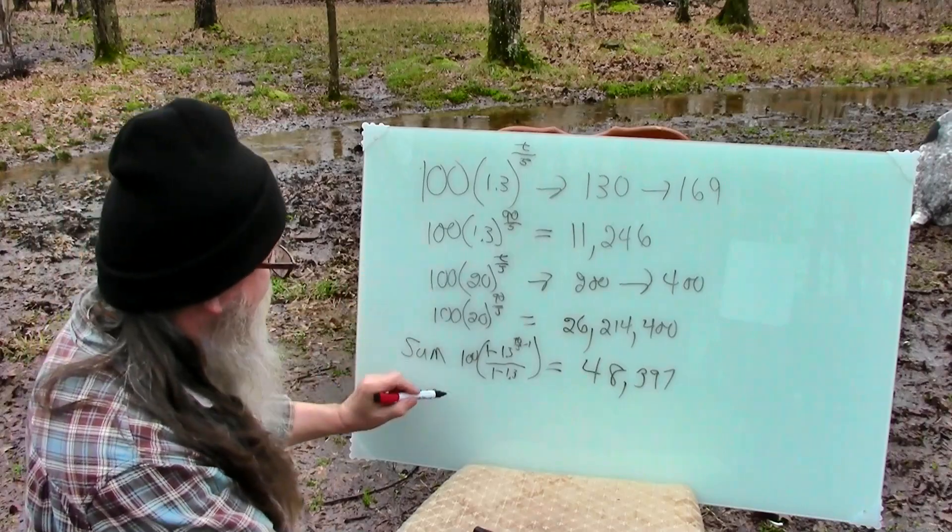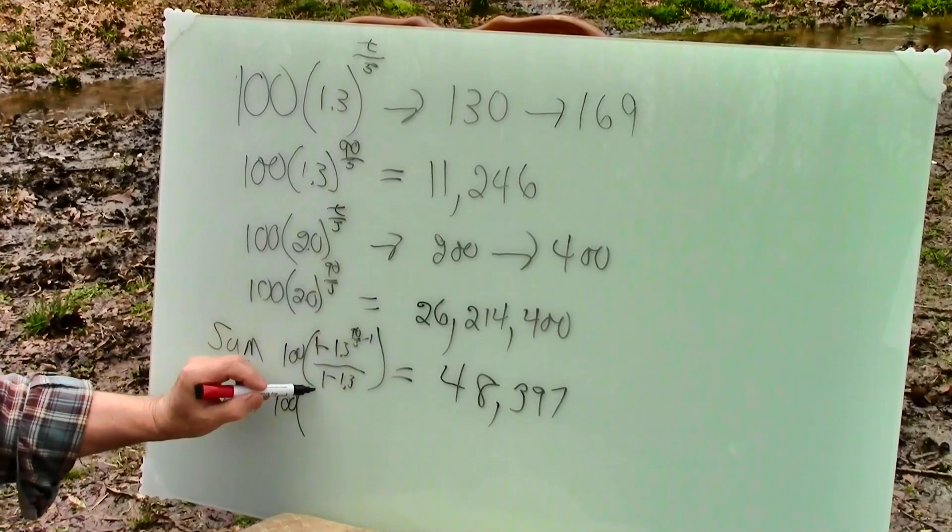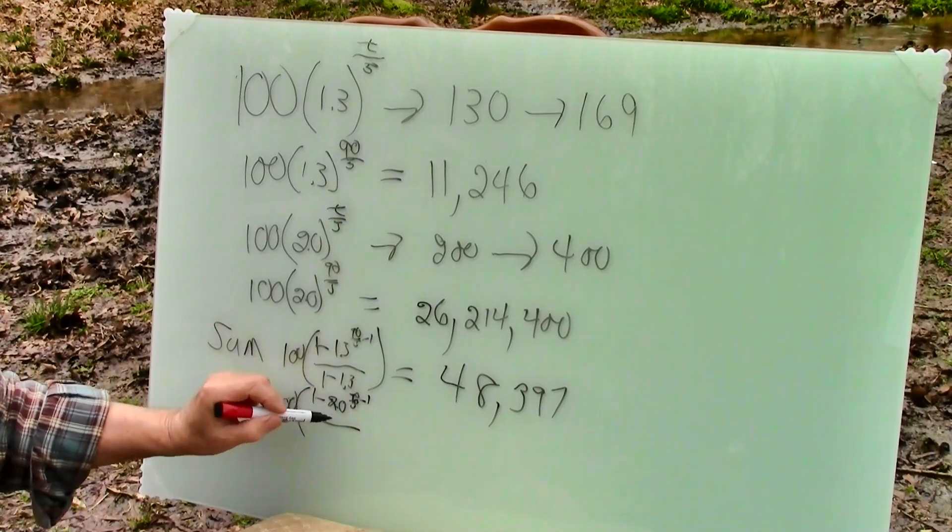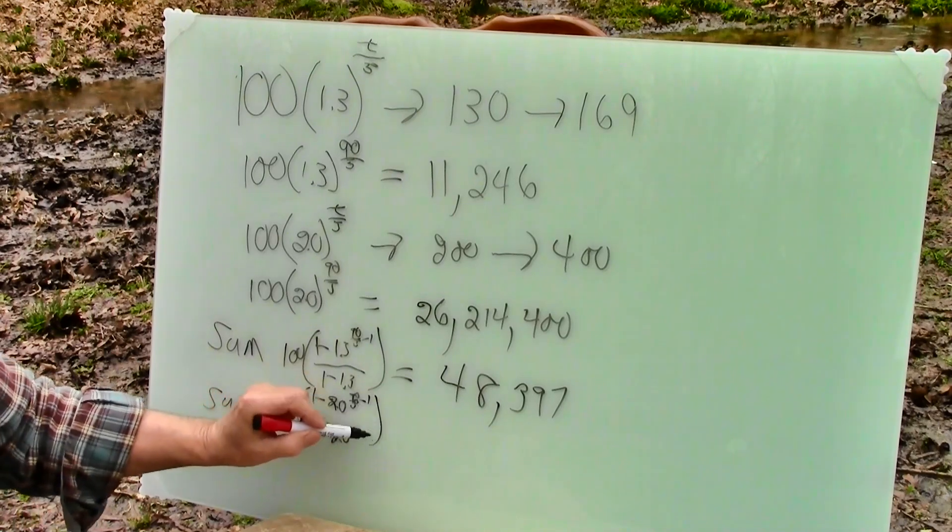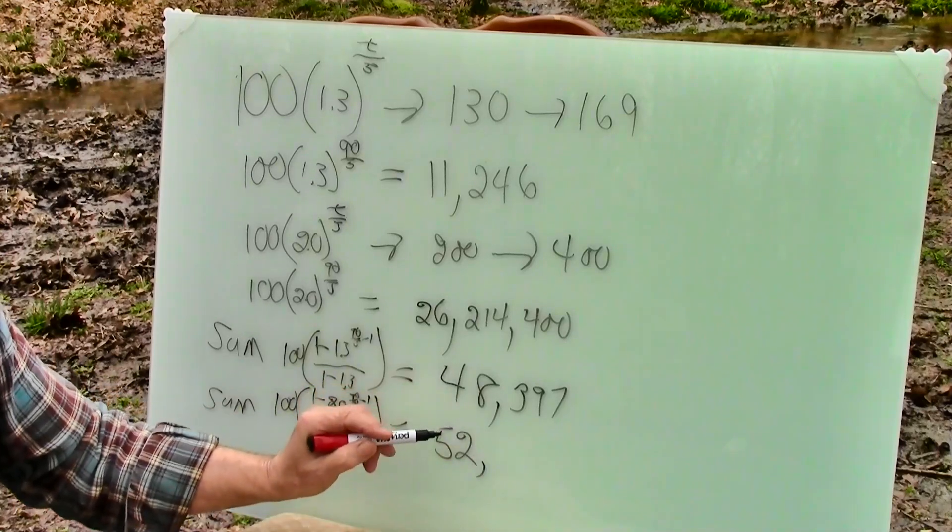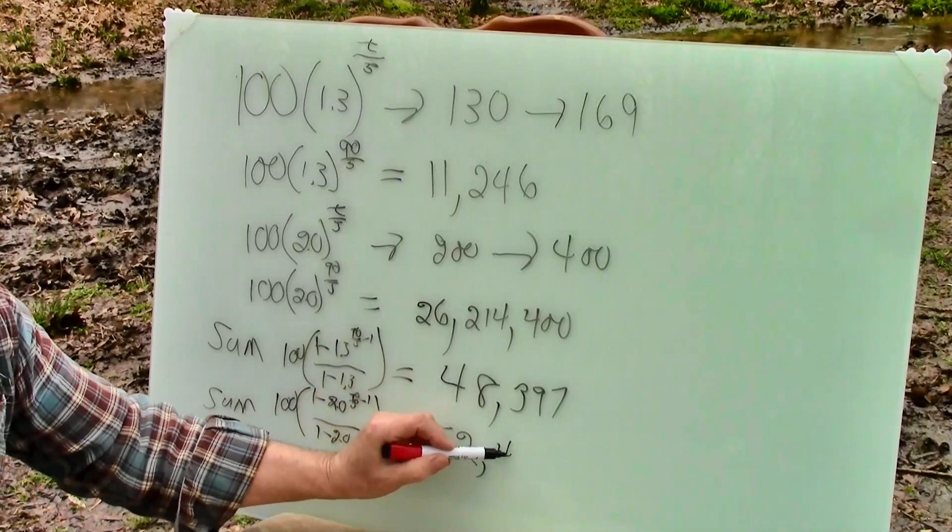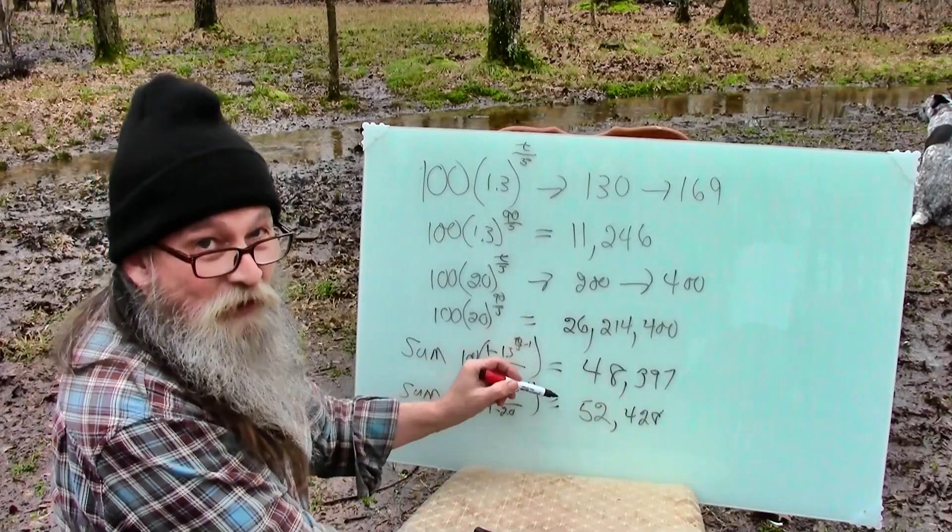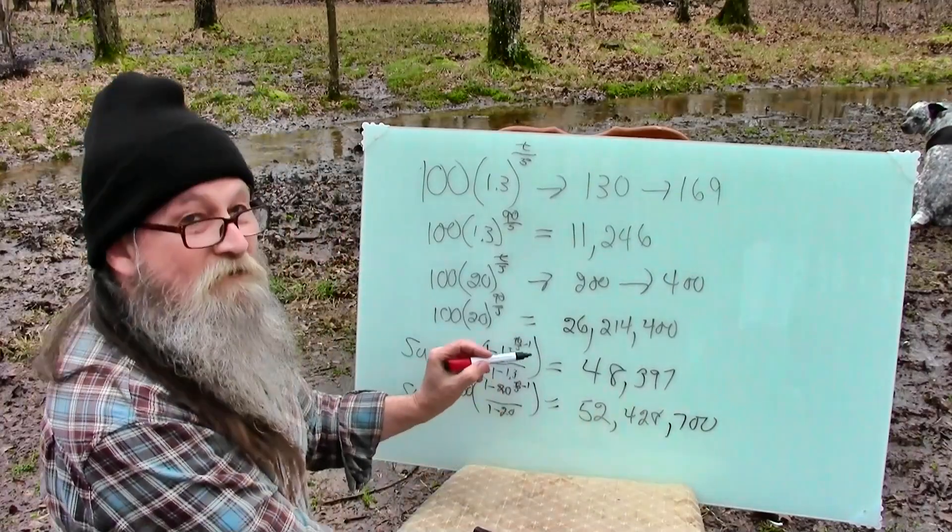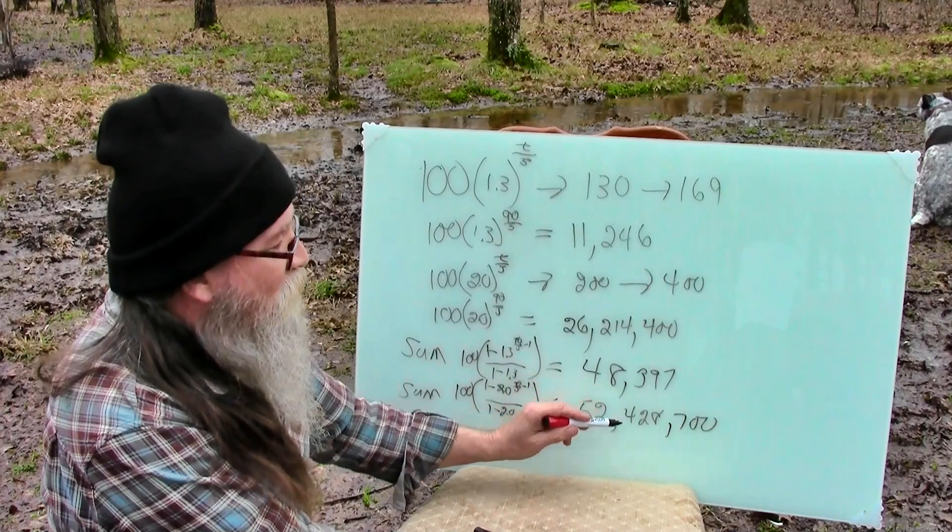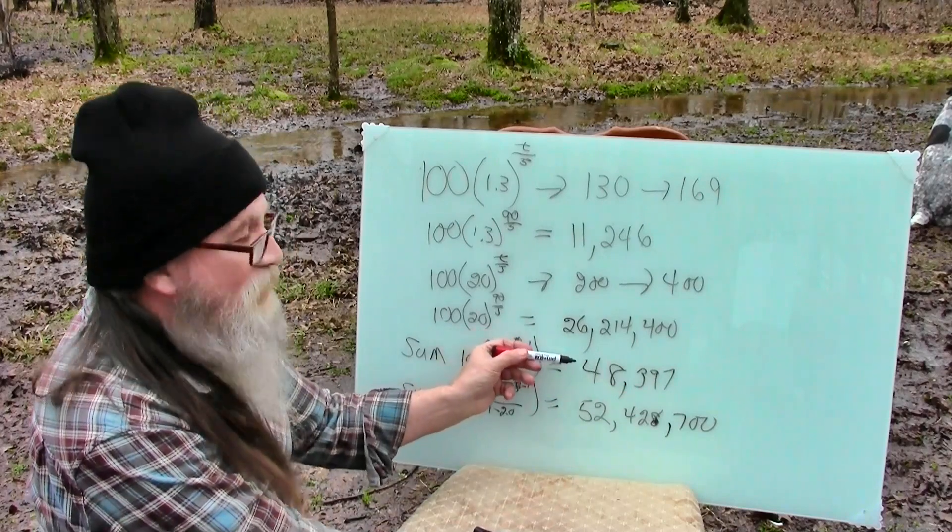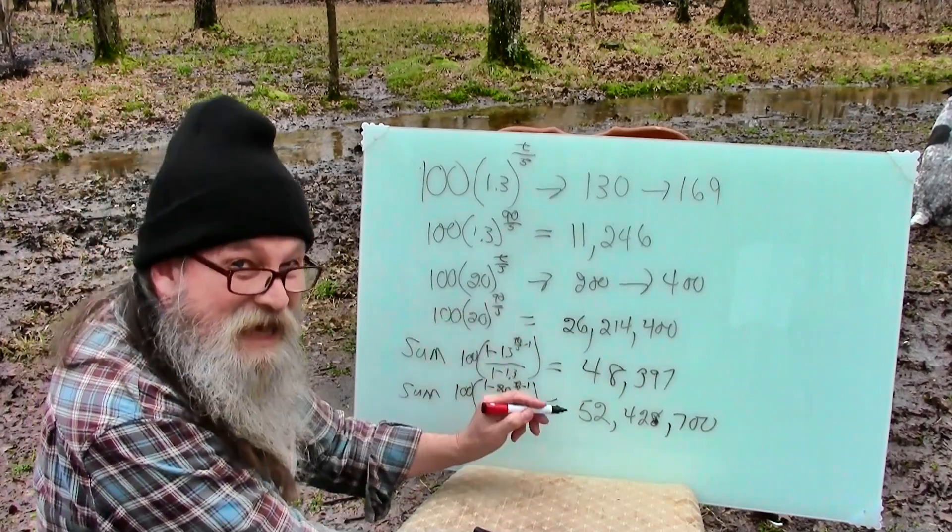Now, let's do our 2.0 example. So all these numbers are the same. I just use 2.0. And I'm writing messy because I just want to get it on here. You ready for this? Not looking bad so far, right? 52,428,700 people. So from 48,000 people to 52 million people.